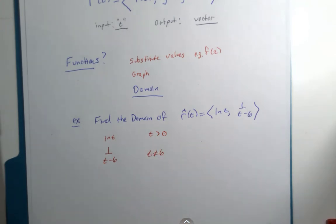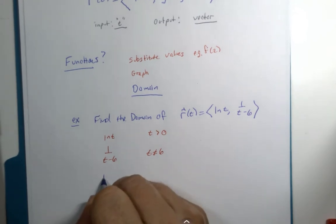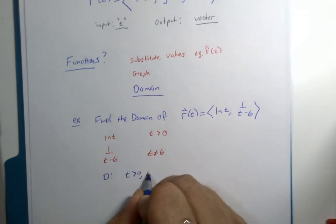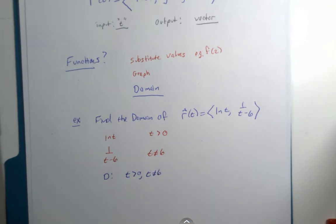So for our domain we need to just find a way to state it without doing overkill. Maybe we could say it like this: t is greater than zero, but t is not equal to six. That's a little bit basic but I'm willing to accept that.